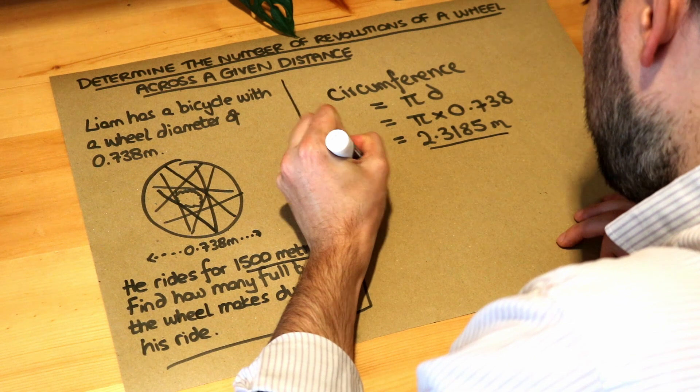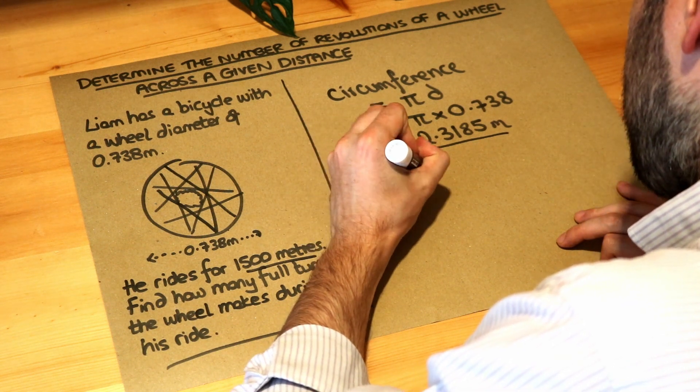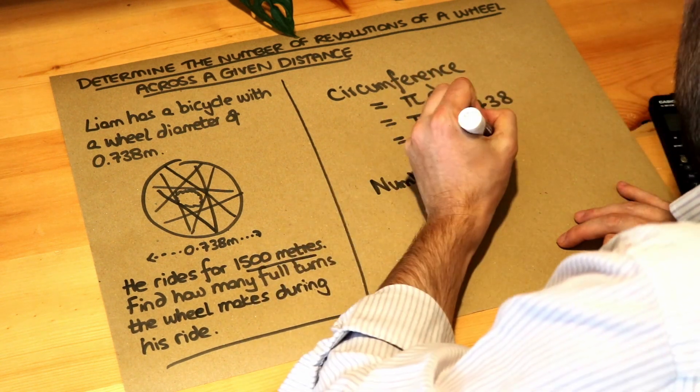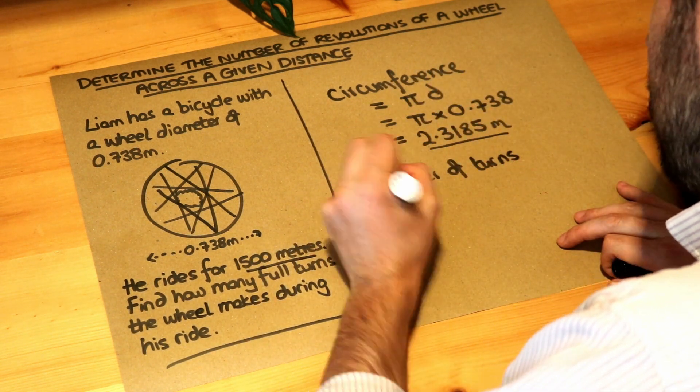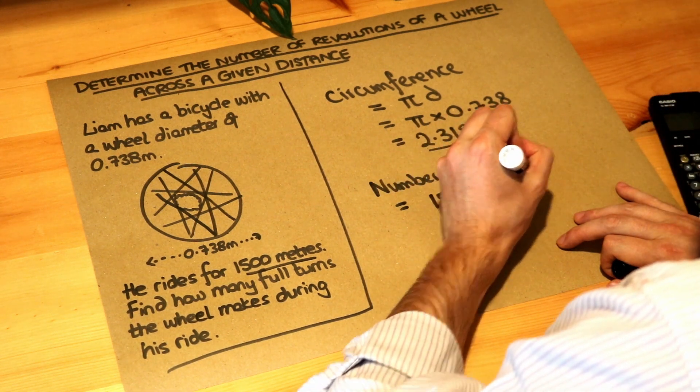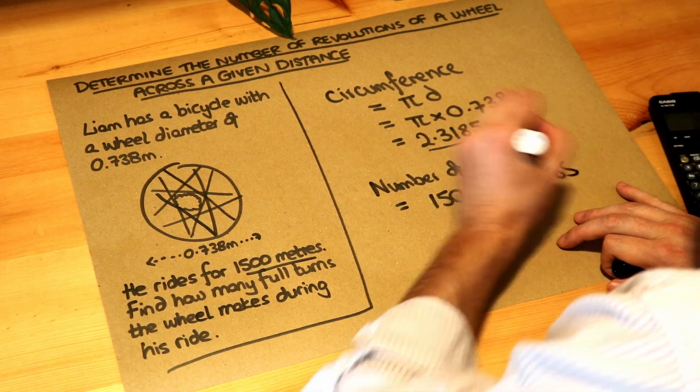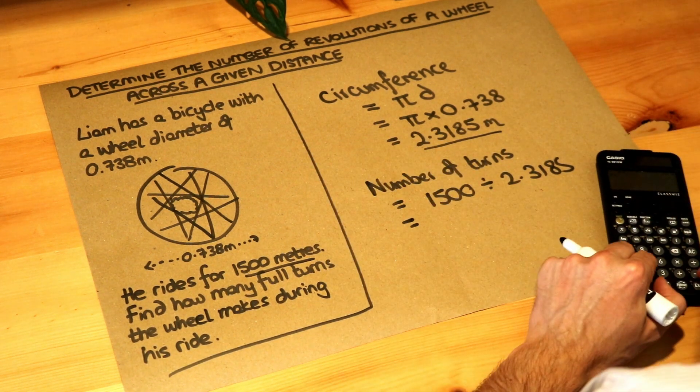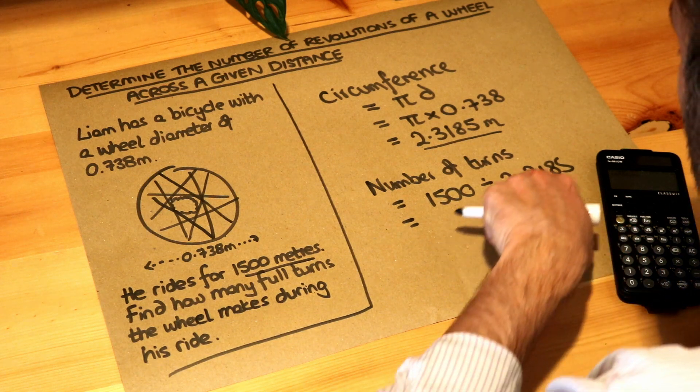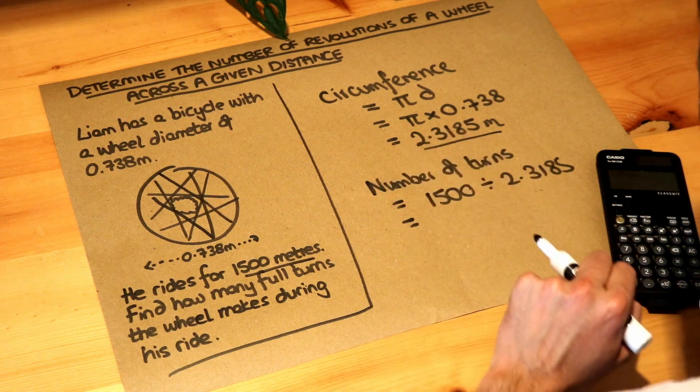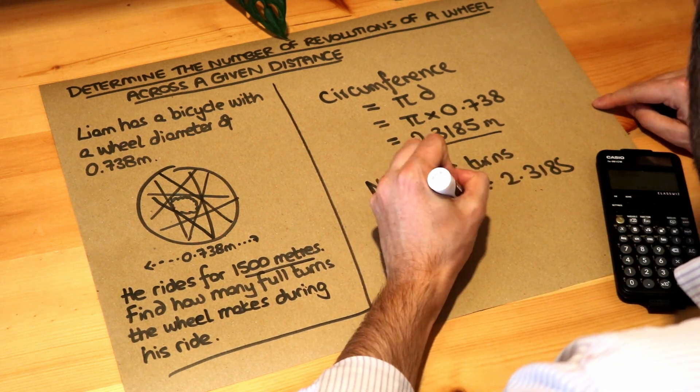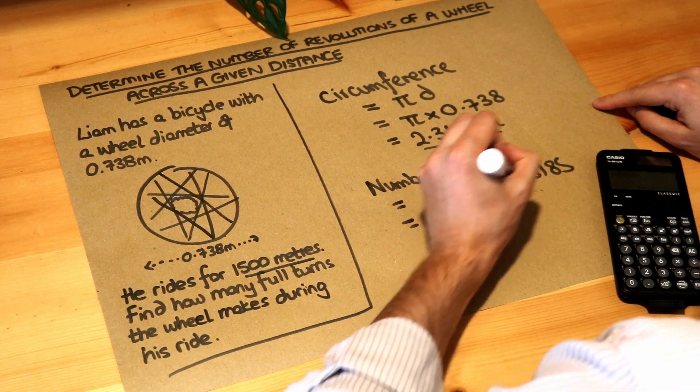So the number of turns, it's just the number of times 2.3185 goes into 1500. So we just divide them. So it's 1500 divided by 2.3185. If I do that on my calculator, I can do 1500 divided by and then I can use the answer key to use that previous calculation. If I press equals, that gives me 646.97 times.